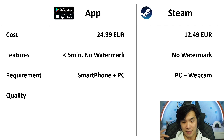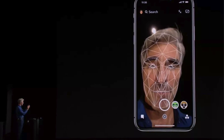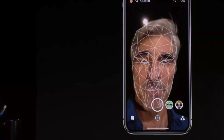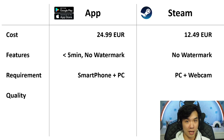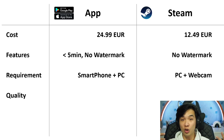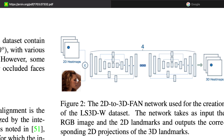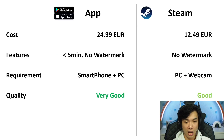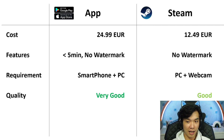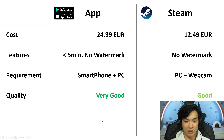The tracking works a bit differently — it's a different technology. The smartphone has Face ID which has depth information, giving you much better tracking. On webcam, it only relies on images with no depth information, so it computes the depth based on the images. As for quality, on the app it is very good, and on Steam it is good. The difference is even negligible — you don't really see big differences.